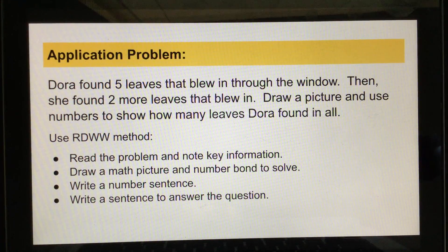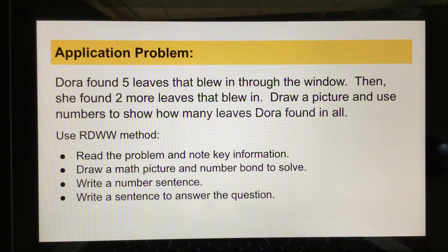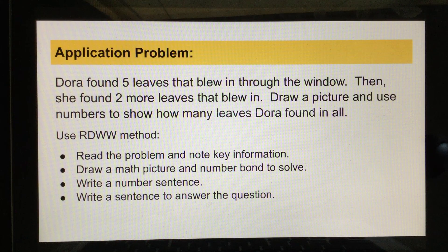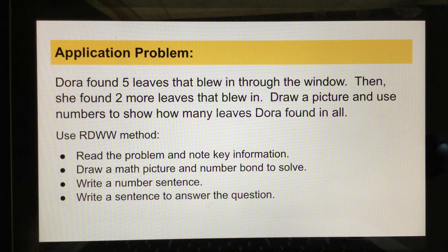We're going to start with our application problem. Dora found 5 leaves that blew in through the window, then she found 2 more leaves that blew in. You will need to draw a picture and use numbers to show how many leaves Dora found in all. We're going to use the Read-Draw-Write-Write method. That means you'll need to read the problem and note the key information, draw a math picture and a number bond to solve, write a number sentence, and write a sentence to answer the question with words.